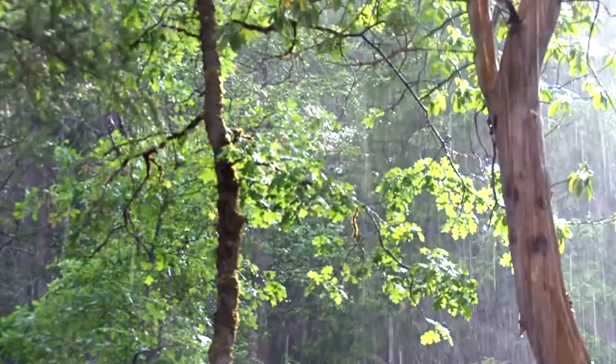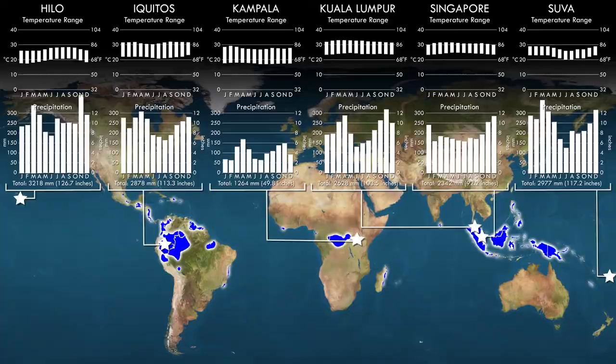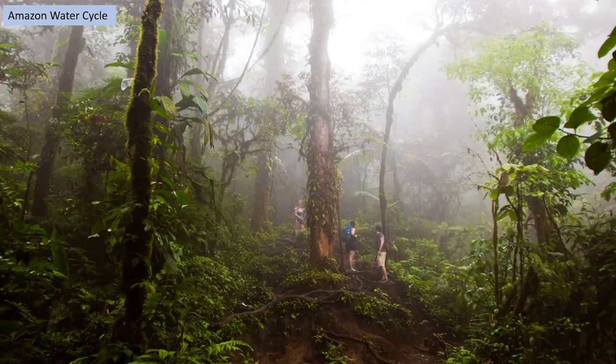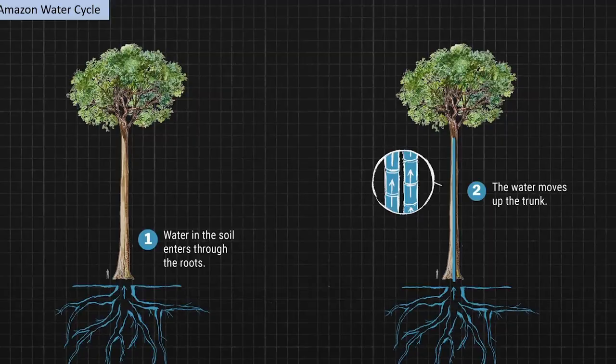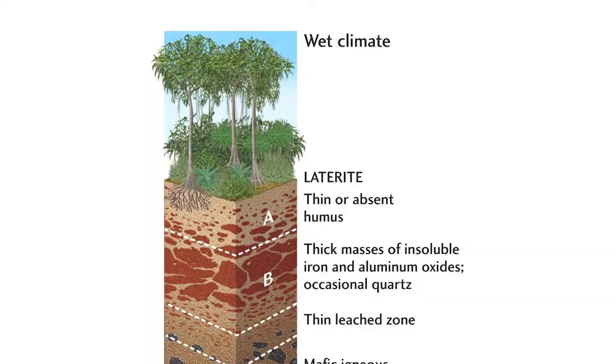As the name implies, tropical rainforests have an average precipitation of 150 mm per month and could receive up to about 2,000 mm a year. Rainforest ecosystems are characterized by heavy convectional rainfall, high humidity, lushness of vegetation, and nutrient-rich but shallow soil. These factors give rise to a unique water and nutrient cycle.